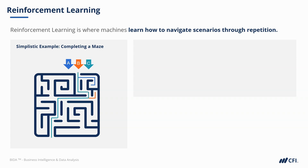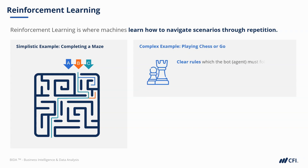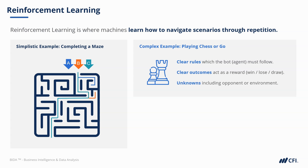Let's consider a more complex example. Suppose a bot is asked to play a game of chess or Go. There are clear rules which the bot or agent must follow. The clear outcomes are defined as a reward for the bot — win, lose, or draw. And there are also unknowns, including what the opponent will do, which is a change to the environment the bot is experiencing.